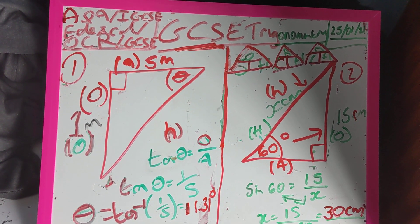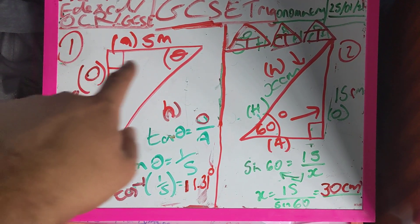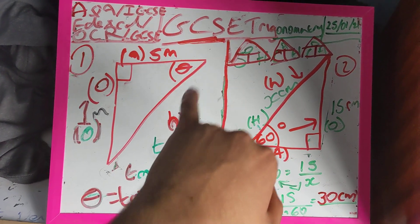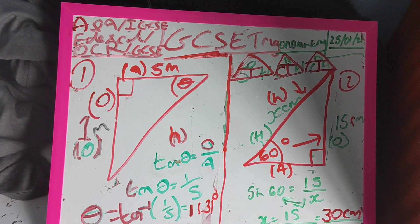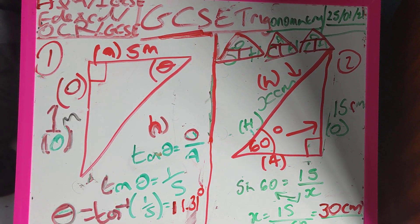So in today's video it is going to be two further examples. Example one, we are asked to work out what theta is. Now we've got an angle and we've got two sides, so step one is always label your sides first.